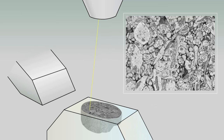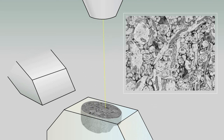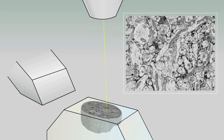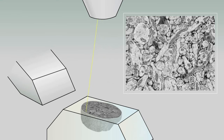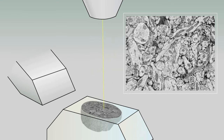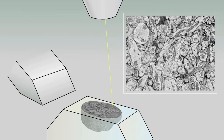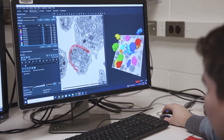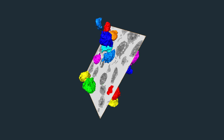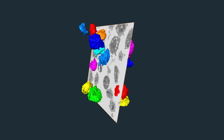The serial block face SEM is one of the techniques we use here. It images a sample and then, with a tiny diamond blade, scrapes off a layer, images the layer underneath, and keeps doing that until we get a 3D representation of the sample. We then take that to our software where we analyze and segment the data to generate 3D models.